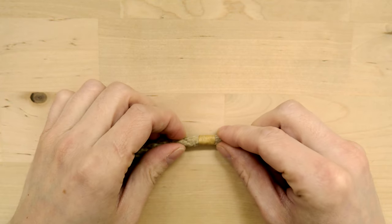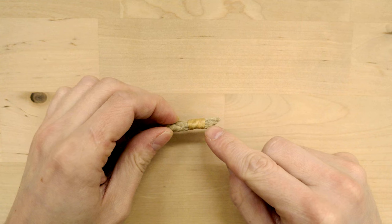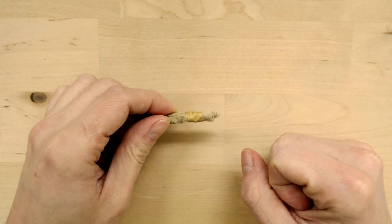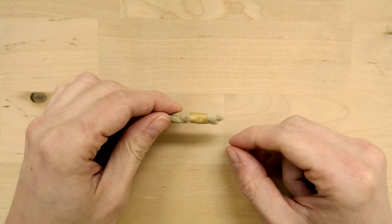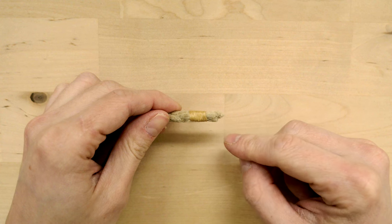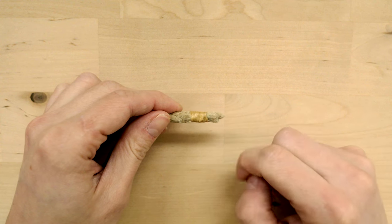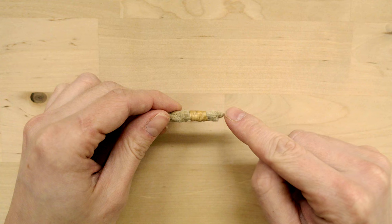In this video I'm going to show you how to use common whipping in order to secure the ends of your rope. This prevents it from fraying and unraveling and it is a very traditional way of securing your rope ends.